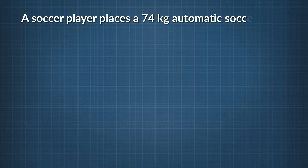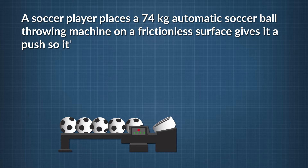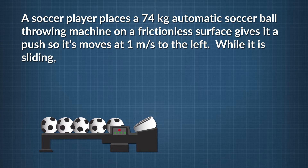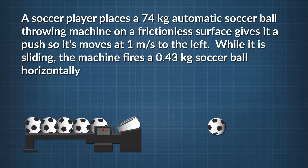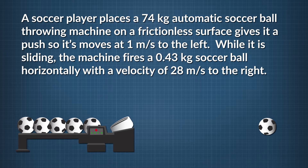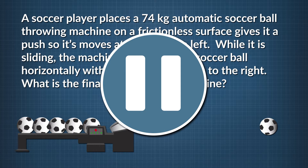Now here's one for you to try. A soccer player places a 74 kg automatic soccer ball throwing machine on a frictionless surface and gives it a push so it moves at 1 m/s to the left. While it is sliding, the machine fires a 0.43 kg soccer ball horizontally with a velocity of 28 m/s to the right. What is the final velocity of the machine? Take a moment, press pause, and try it for yourself.